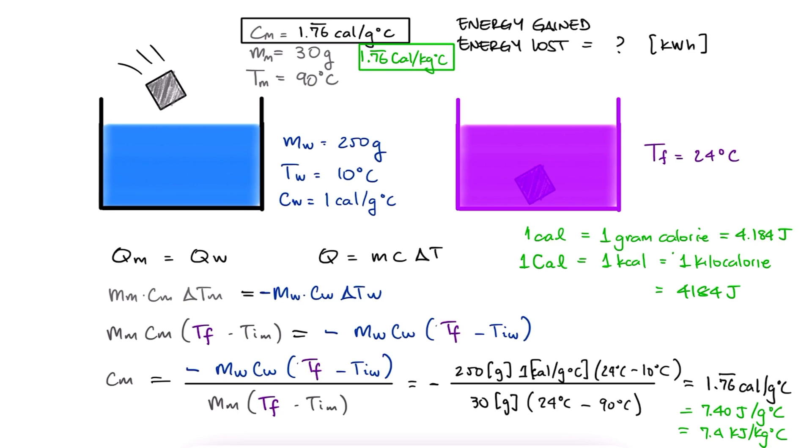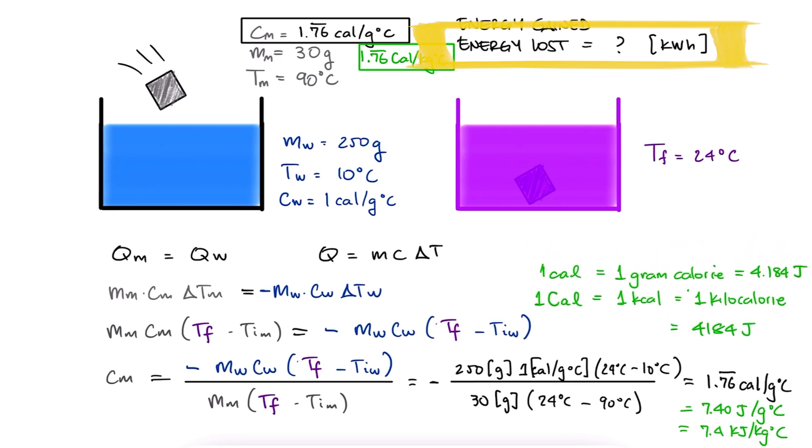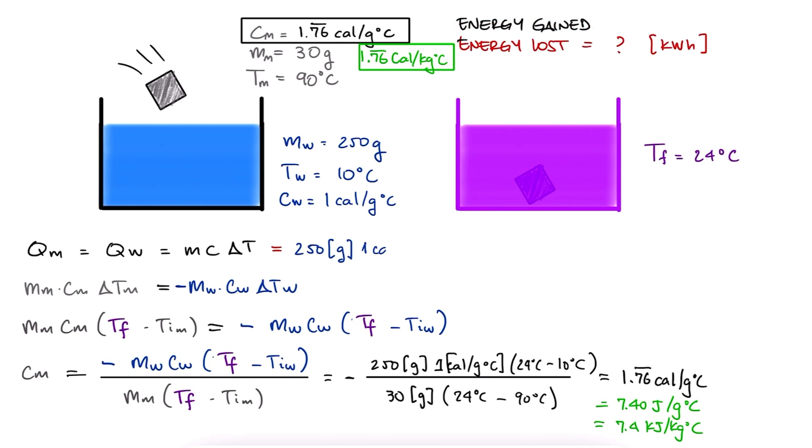Now for the second question, the heat that the metal lost, which is the same as the heat that was transferred, or the heat the water gained, is 3500 calories, 3.5 kilocalories, or 14.64 kilojoules.